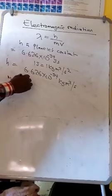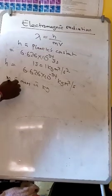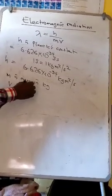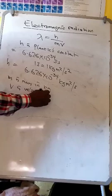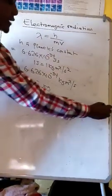M is mass in kilograms, then v is velocity or speed in meters per second.